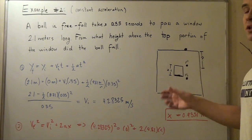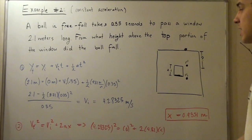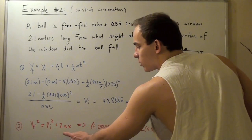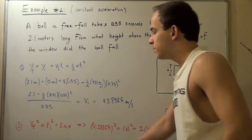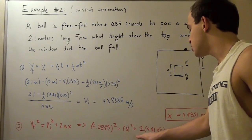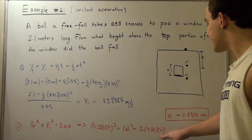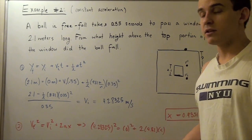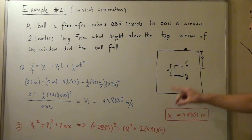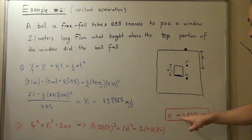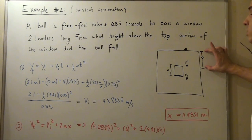Acceleration remains 9.81 m/s² since the object is still in free fall. Using the formula v_final² = v_initial² + 2·a·x, we plug in: (4.28325)² = 0² + 2 × 9.81 × x. Solving for x, we get that the displacement from the roof to the top portion of the window is 0.935 meters. This is the displacement we wanted to find initially.